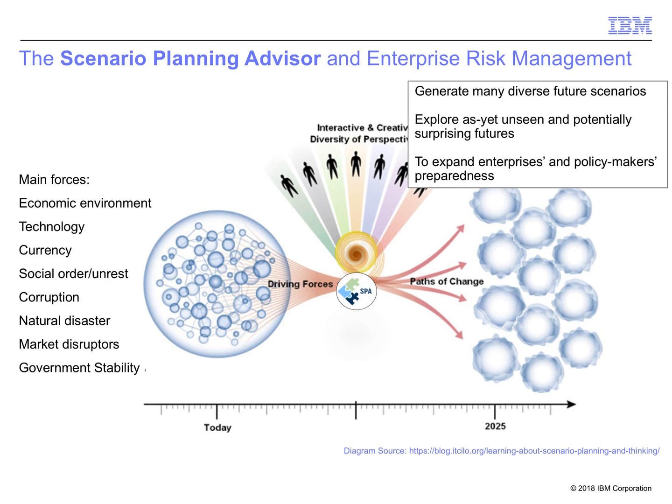The IBM Research Scenario Planning Advisor is a decision support system that allows enterprises and policy makers to generate diverse, alternate scenarios of the future, enhancing their ability to imagine and consider various possible outcomes, including unlikely but potentially impactful futures.